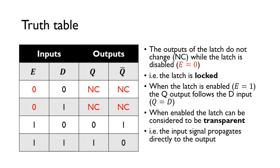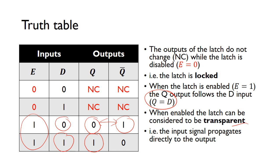It's only when we enable the latch — by making the E input equal to 1 — that whatever you put on D appears on Q. If we put D to 0, Q becomes 0. So essentially Q just equals D, and not-Q is the inverse of this. When E is 1, we say the latch is transparent: whatever you put on D gets passed straight through, and whatever goes onto D will come out of output Q. Not-Q is always the opposite of Q.